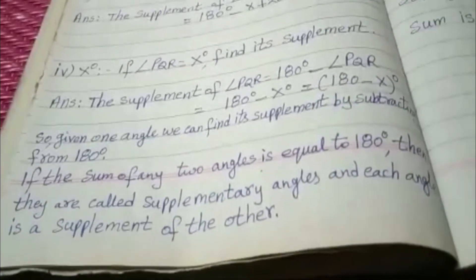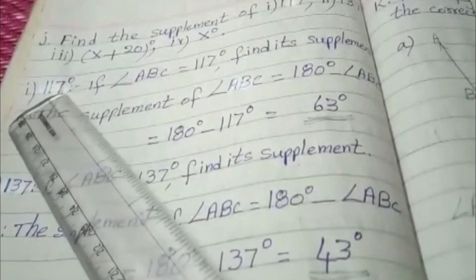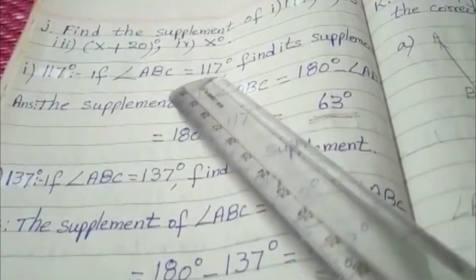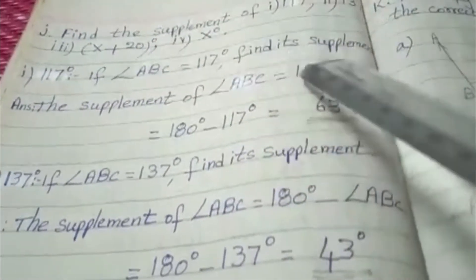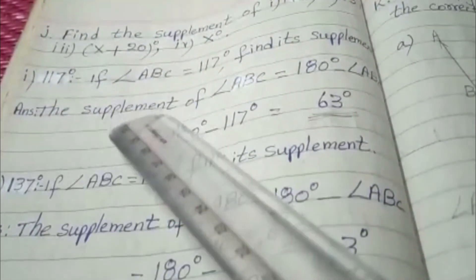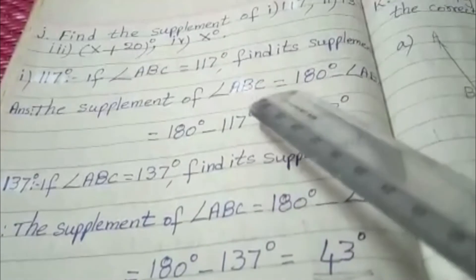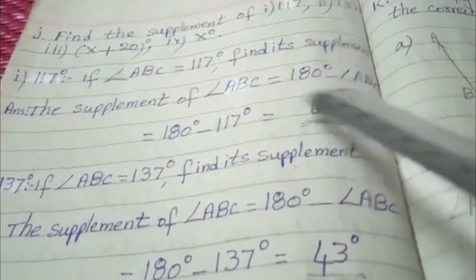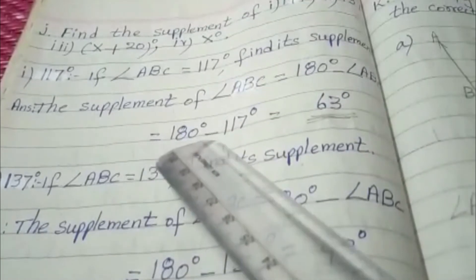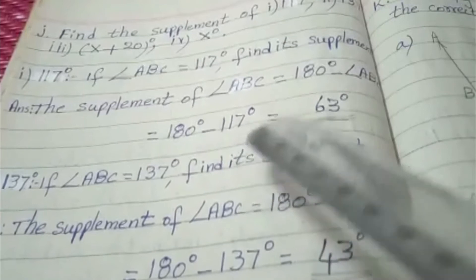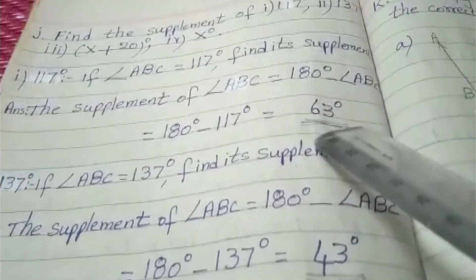Now let us see question number 1. See here, 117 degrees. If angle ABC is equal to 117 degrees, find its supplement. Check the solution. The supplement of angle ABC is equal to 180 degrees minus angle ABC is equal to 180 degrees minus 117 degrees is equal to 63 degrees is the answer.